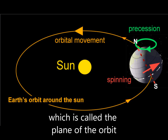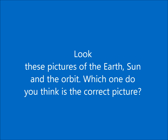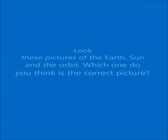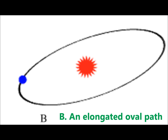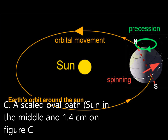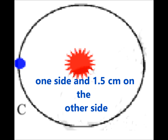Now look at the three pictures of the earth, sun, and the orbit. Which one do you think is correct? There's a circular path, an elongated oval path, and a scaled oval path where the sun is in the middle with 1.5 centimeters on one side and 1.5 centimeters on the other side.